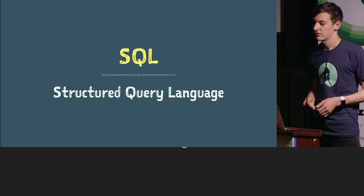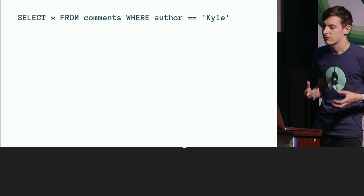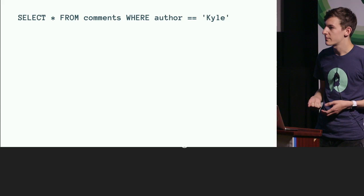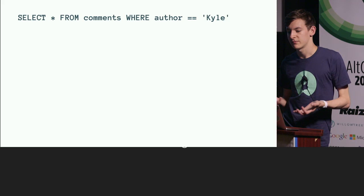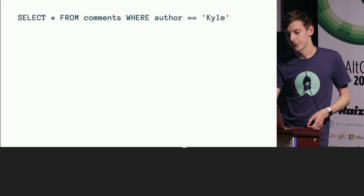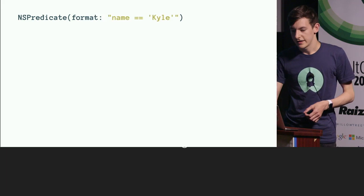SQL is another well-known one — structured query language. It's a declarative DSL where you describe what you're trying to do, and this differs by implementation. For example, if we wanted to select all the comments where the author is Kyle, we might write an SQL query like: SELECT * from the table name WHERE author equals Kyle. We didn't mention how to perform this query — depending on the implementation, perhaps you're using some SQL server or SQLite, and the implementation could be vastly different. Another one you might be more familiar with is NSPredicate — a declarative DSL for filtering, used to describe filtering regardless of the implementation.